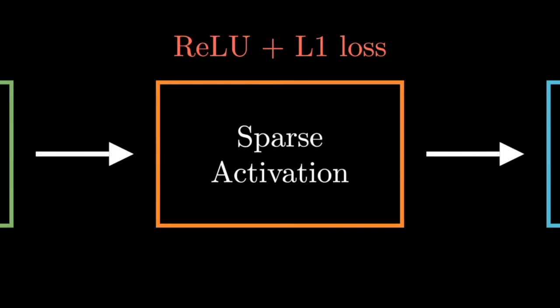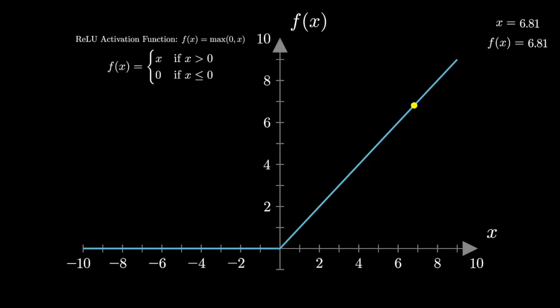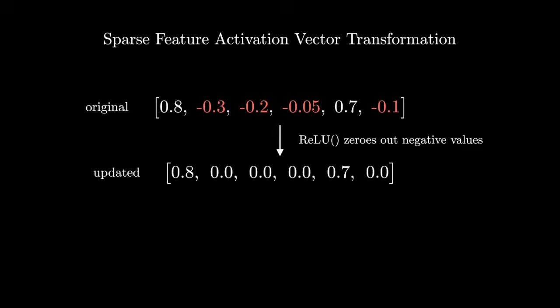An L1 penalty is added onto CLT feature activations during training, which discourages anything but the strongest signals. There are of course more details about the L1 term, but that's for another video. On the other hand, RELU zeros out negative activations on every forward pass during both training and inference, filtering out weak or noisy signals.